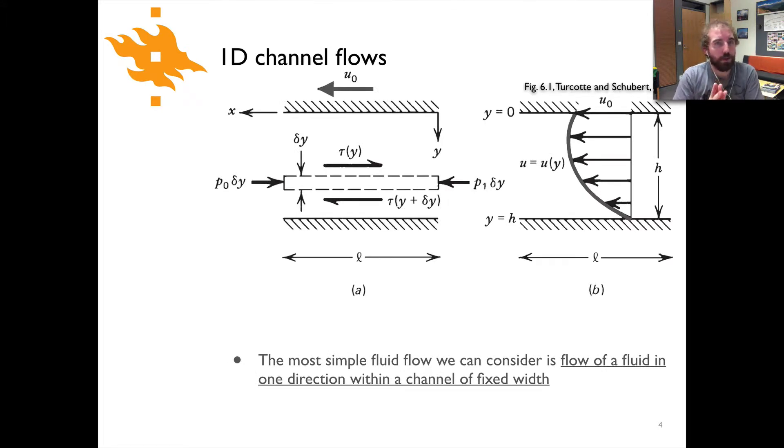The most simple thing that we can consider is a one-dimensional channel flow in a channel of fixed width. The figure on top is going to be with us for basically the rest of the lecture. Here what we're looking at is basically a slice through a channel of fixed width. This hashed area at the bottom and top would be the walls of the channel and the region in between is the channel itself. The coordinate system is x going along the channel, y going across the channel.